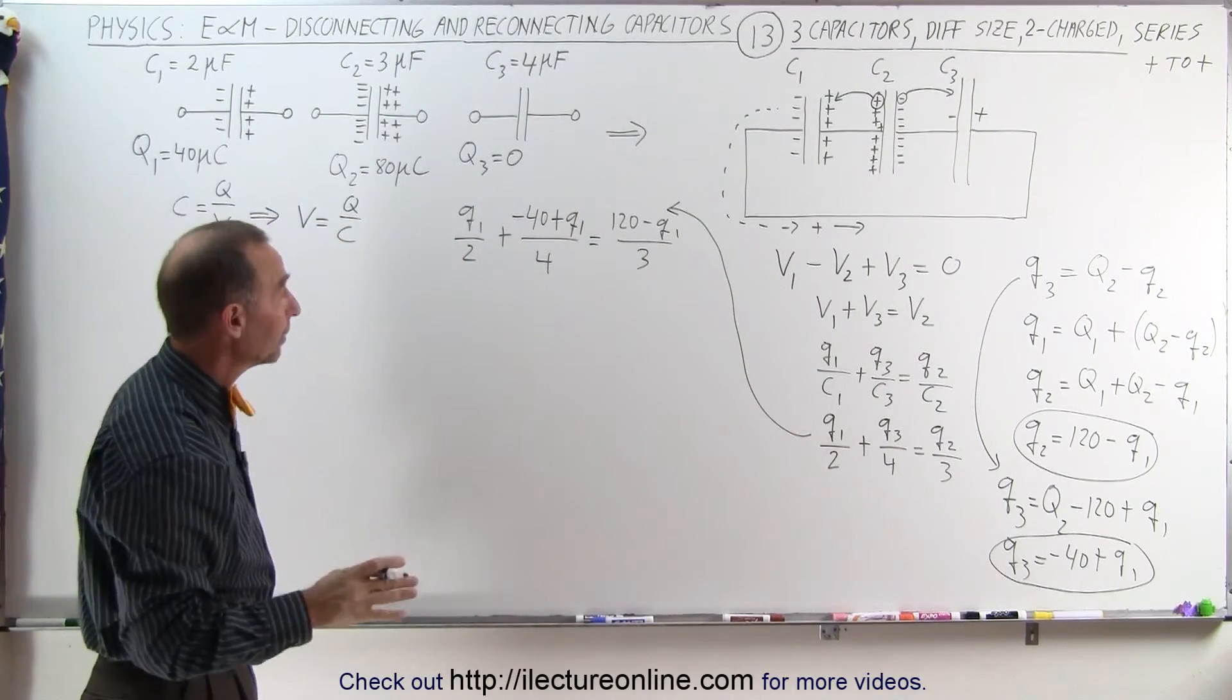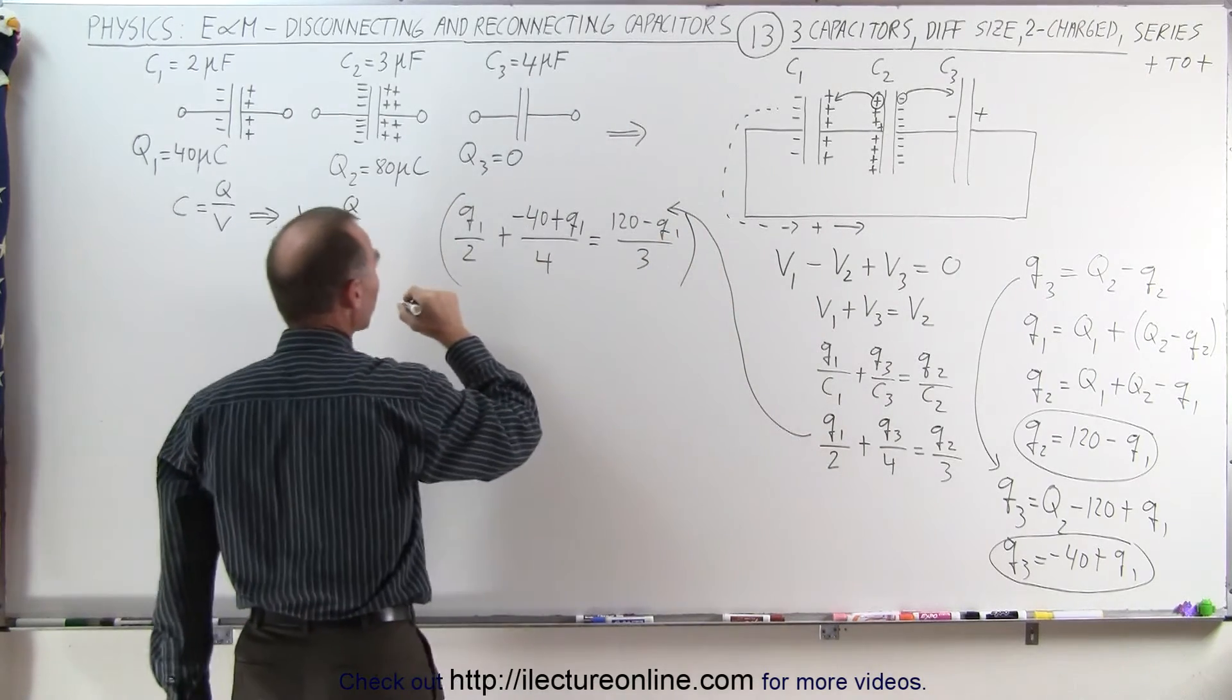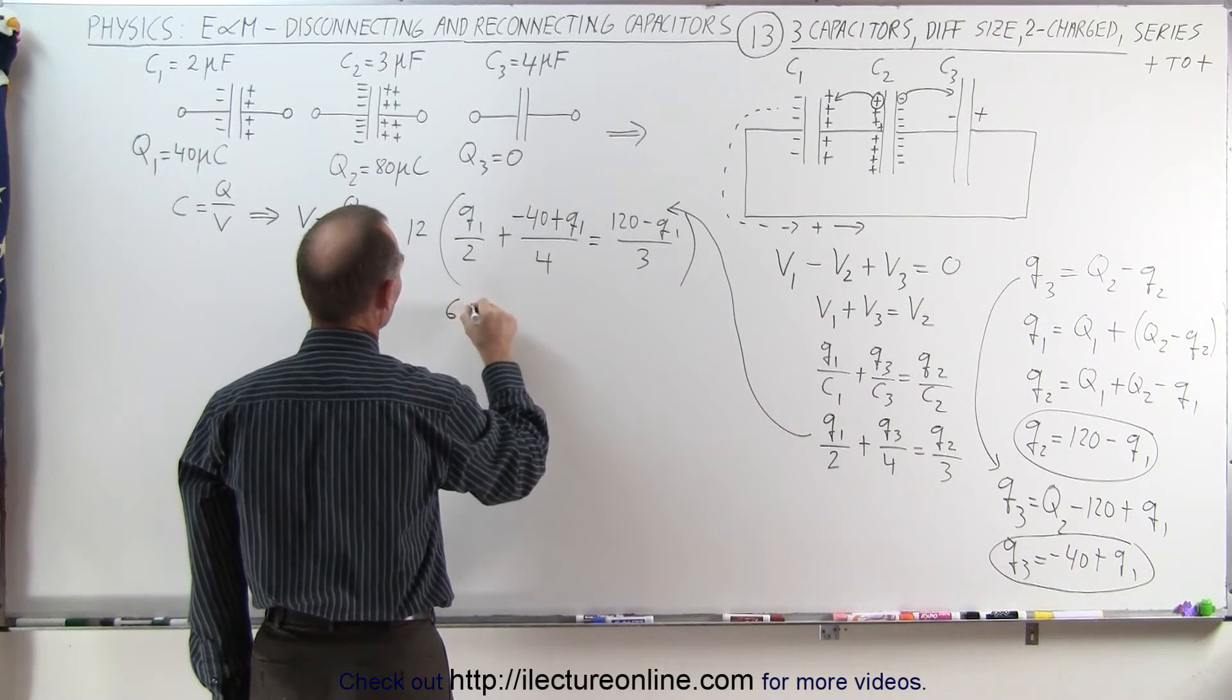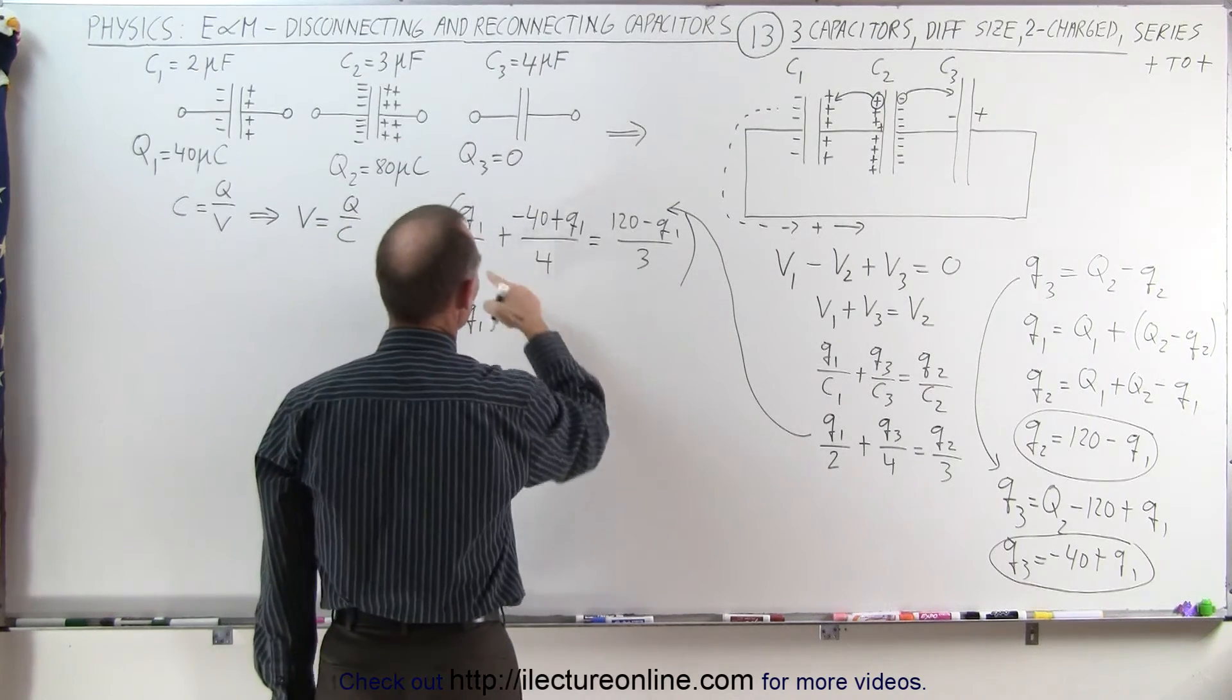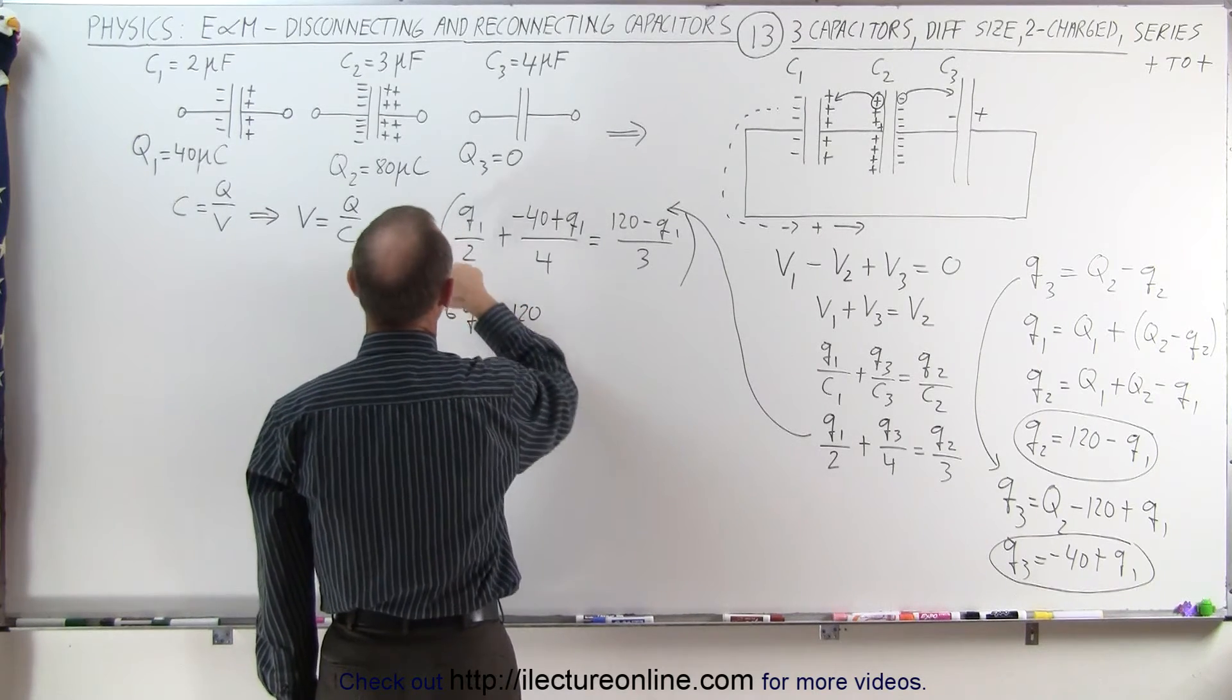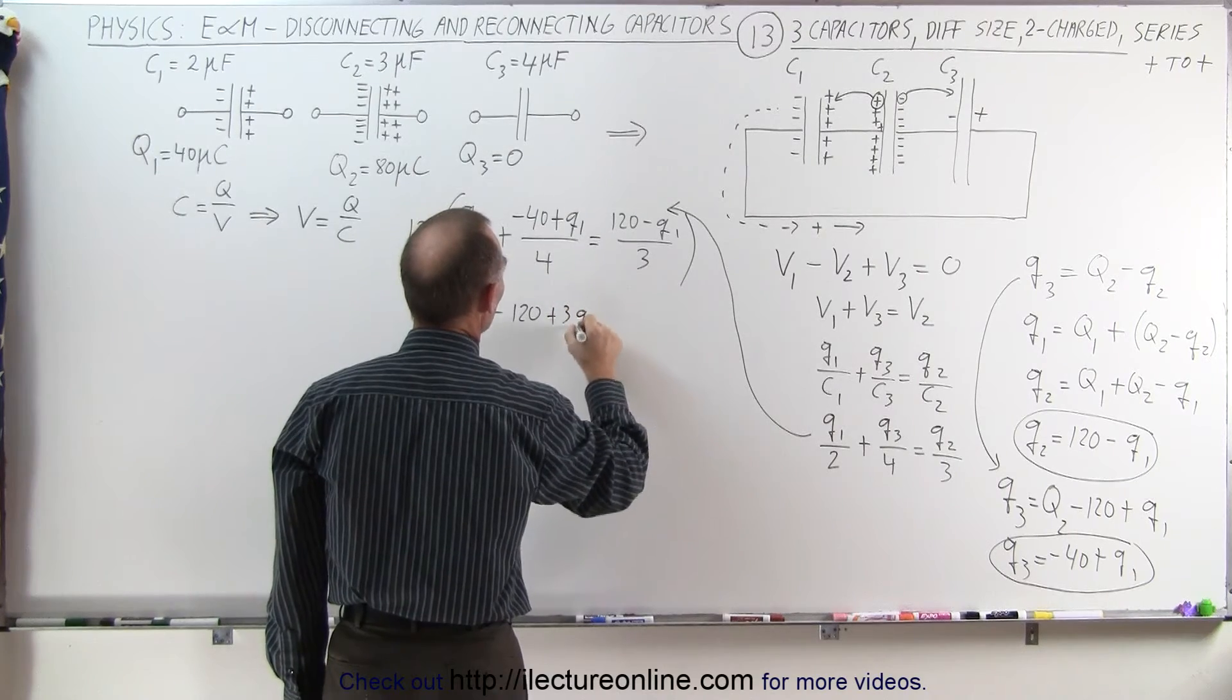Now I'm ready to get rid of the denominators by multiplying both sides of the equation by the lowest common denominator, which in this case is 12. And 12 divided by 2 is 6. So we get 6Q1 plus 12 divided by 4 is 3. 3 times minus 40, that would be minus 120, minus 120.